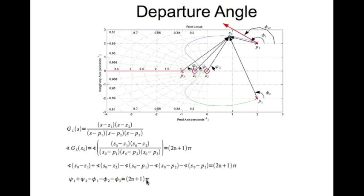Now S0 minus Z1, S0 minus Z2, S0 minus P1, all these are vectors. When you look at where those vectors are, you see that S0 minus Z1 is in fact this vector. S0 minus Z2 is in fact this vector. S0 minus P1 is in fact this vector and so on.